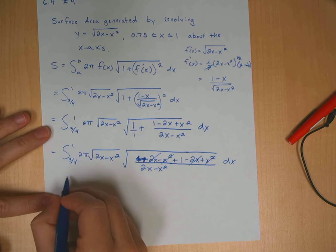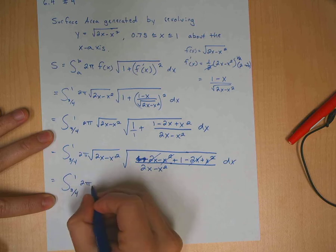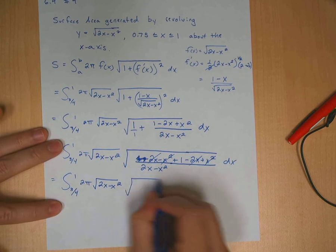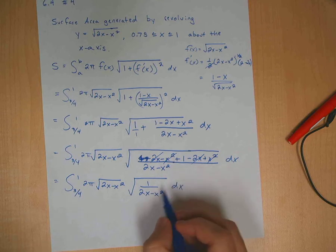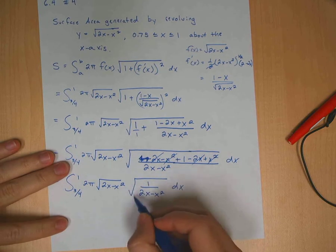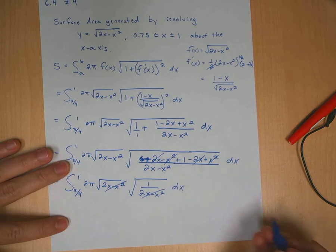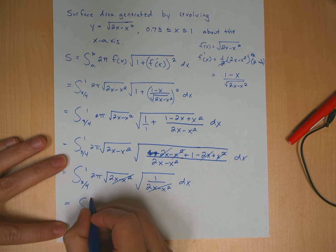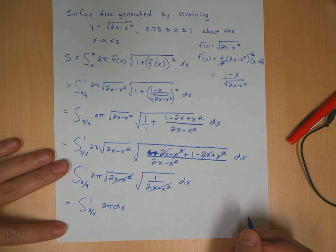So this becomes the integral from 3/4 to 1 of 2π times the square root of 2x minus x squared times the square root of 1 over 2x minus x squared. Taking the square root of top and bottom separately, the square root of 2x minus x squared in numerator and denominator cancel, and the square root of 1 is 1. So everything simplifies down to just the integral of 2π.